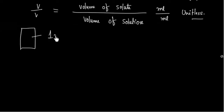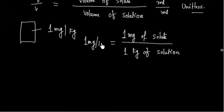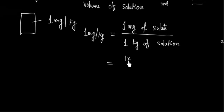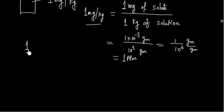If a solution has a strength of 1 mg of solute per kg of solution, this can be written as 1×10⁻³ g divided by 10³ g, which equals 1 by 10⁶ g/g. So 1 mg per kg is equivalent to 1 PPM.